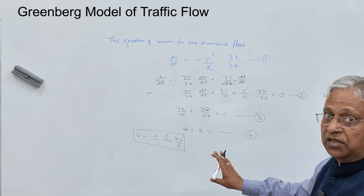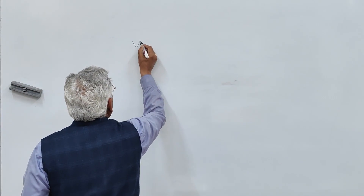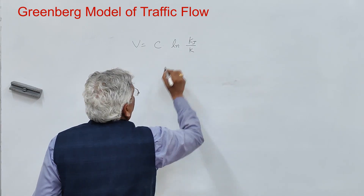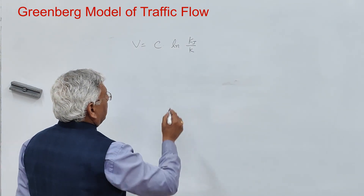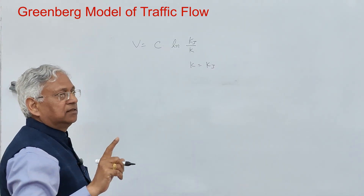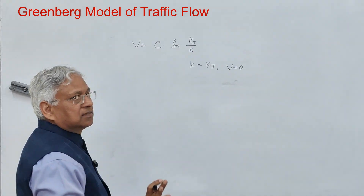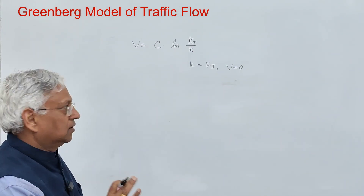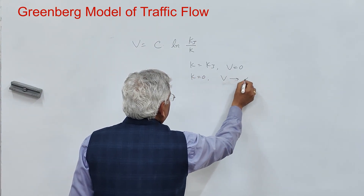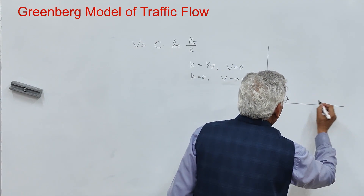This is different from the Greenshields equation. When k equals kj — that is, density approaches jam density — speed becomes zero, which is reasonable; that boundary condition is satisfied. But when k is zero, speed tends to be infinite, and that boundary condition is not satisfied by the Greenberg model.